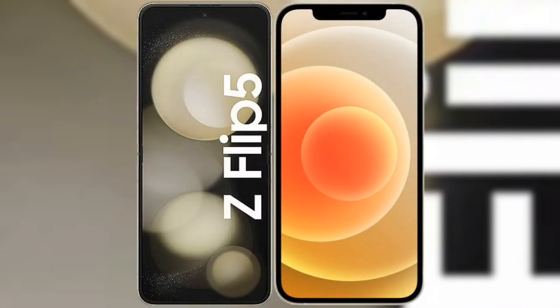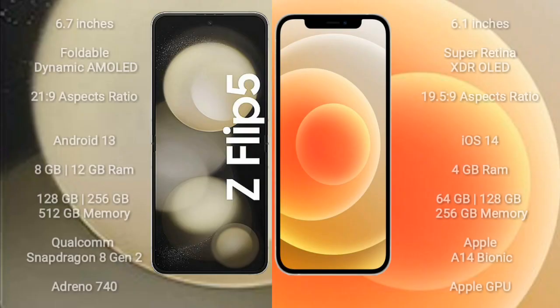I will compare the new Samsung Galaxy Z Flip 5 with iPhone 12. Samsung Galaxy Z Flip 5 comes with a 6.7-inch foldable dynamic AMOLED display with an aspect ratio of 21:9. iPhone 12 comes with a 6.1-inch Super Retina XDR OLED display with an aspect ratio of 19.5:9.